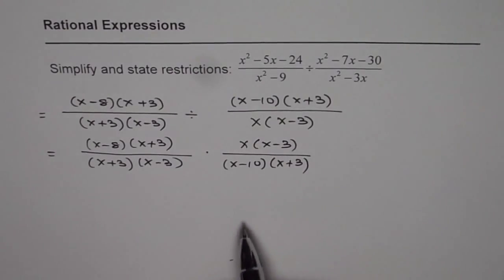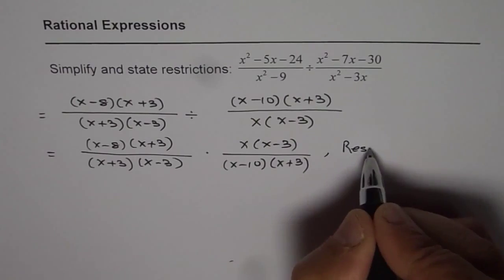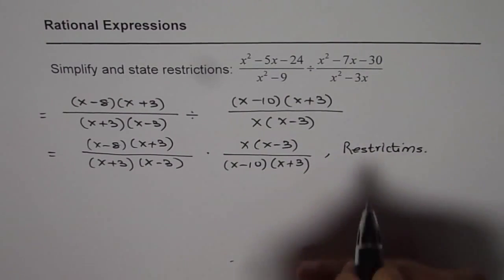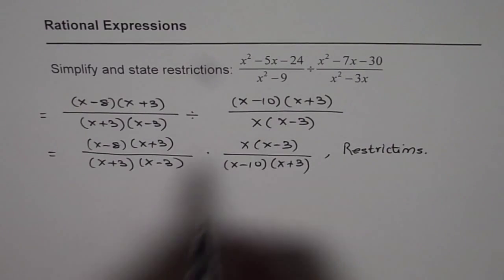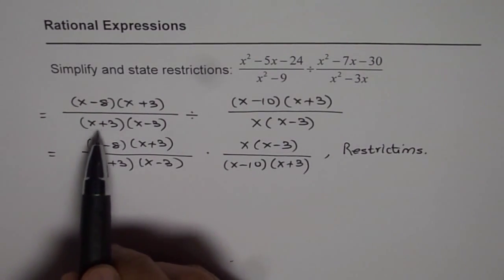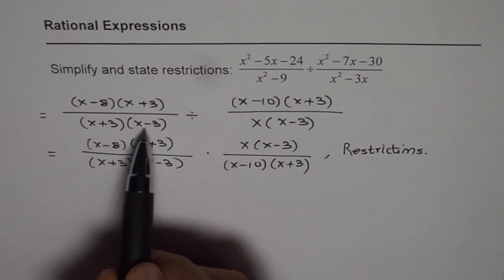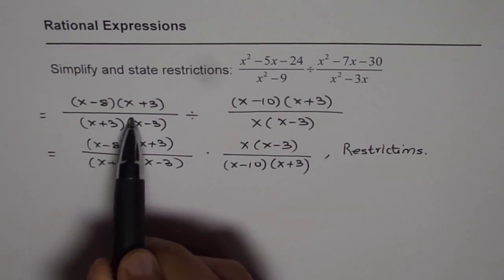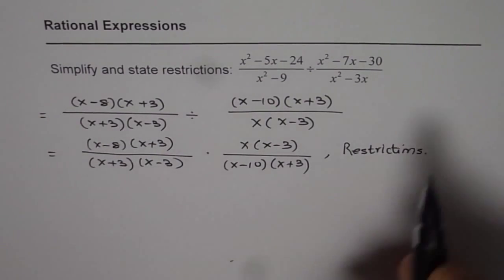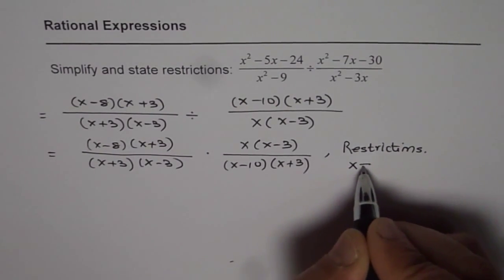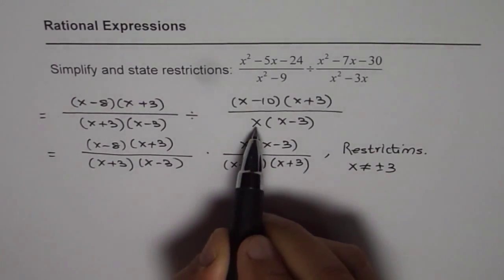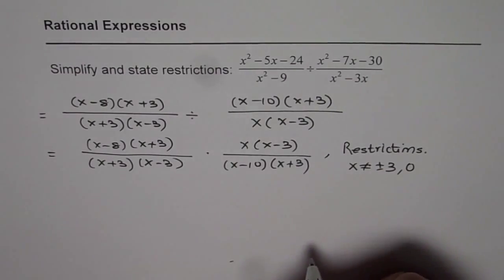We can actually cancel out the common factors. But before doing that, let us write down restrictions. Restrictions are whatever makes denominator 0. If we see these factors, x cannot be plus or minus 3 and that makes the first term undefined. So, we have x not equal to plus or minus 3. Here, we see that x cannot be 0 and plus 3. So, we write 0. 3 is already there.